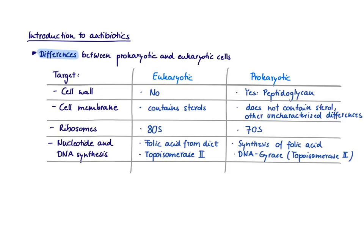Most drugs target receptors in our body and modulate our own body function, like the beta blockers — they block beta receptors in the heart and in the kidney. But for antibiotics, it's different. We actually don't want to even touch our own body cells; we only want to target bacteria.